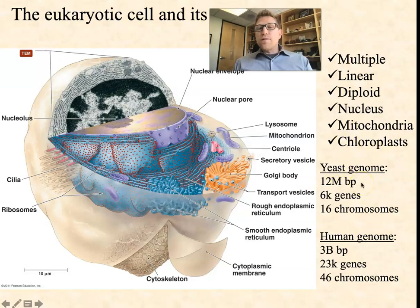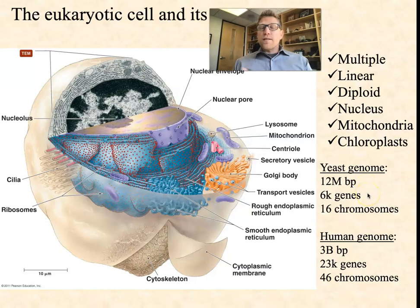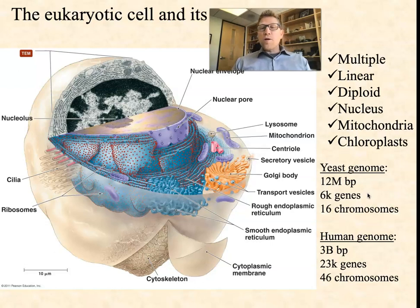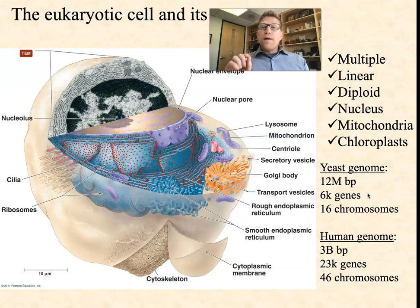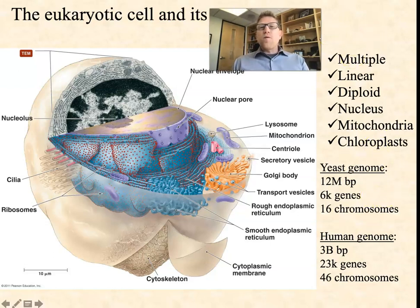How big are the genomes? One of the smaller eukaryotic genomes would be yeast, at around 12 million base pairs, making up about 6,000 genes on 16 separate chromosomes. Compare that to the human genome at about 3 billion base pairs — 23,000 to 25,000 genes and 46 chromosomes. Next week we'll talk about prokaryotic genomes; a bacterial genome like E. coli is only a few million base pairs, so much smaller even than the smallest eukaryotic genome.